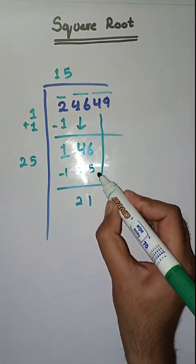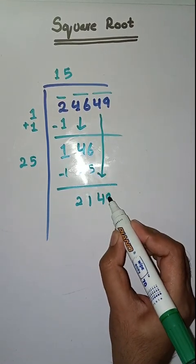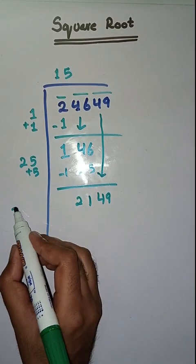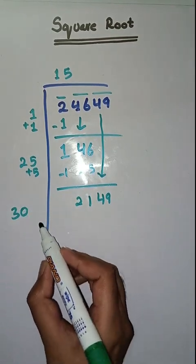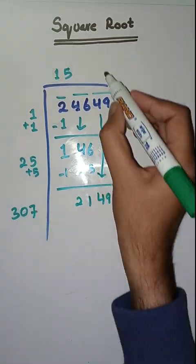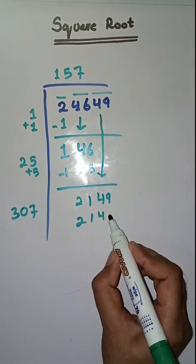Next pair is 49. We bring it down. Here we do 25 plus 5, which is equal to 30. So we will take a number 7. 307 times 7 is 2149.